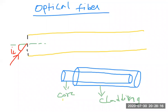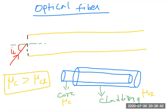The core refractive index is written as mu_CO and the cladding refractive index as mu_CL. The core refractive index is greater than the cladding refractive index — so core is the denser medium and cladding is the rarer medium. Therefore, mu_core is greater than mu_cladding.